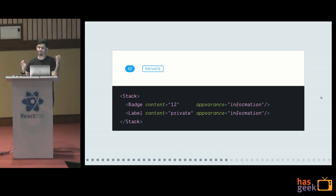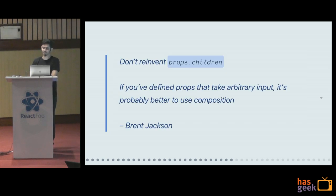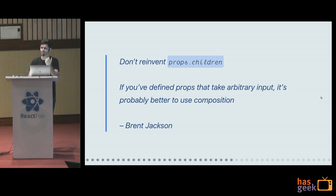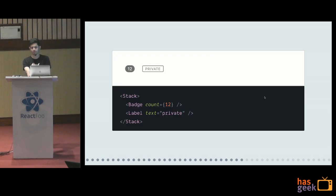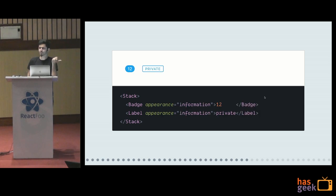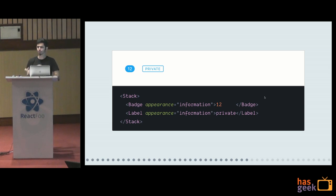I almost did that, but luckily five minutes later I saw this tweet by Brent Jackson: 'Don't reinvent props for children.' React already gives you a way of putting content inside components — it's called `children`, a native property of React. So if you're defining props that take arbitrary input like count or text, it's probably better to just use composition — put it inside the thing. That's tip number four: a good component is composable. Instead of a custom prop, just put it inside: say badge and the child is 12, label and the child is 'private'. You immediately remove a prop — the minimal API surface becomes even smaller.